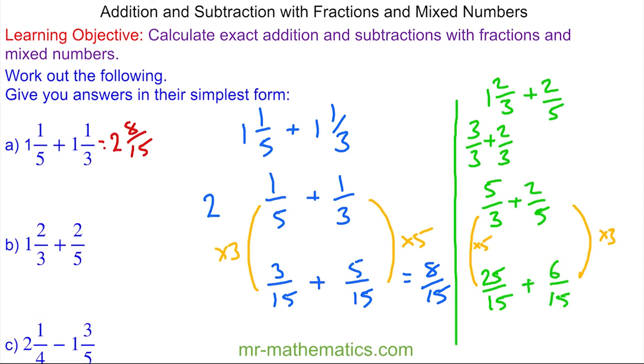So adding them together gives me a total of thirty-one fifteenths, which as a mixed number is two and one-fifteenth.